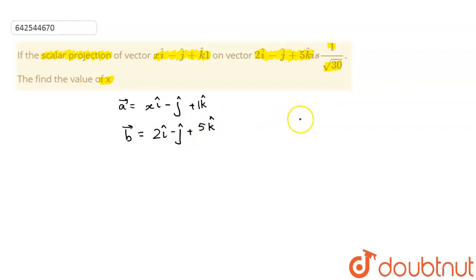Now the scalar projection of this vector is 1 upon root 30. This is the scalar projection. So I have to find the value of x. I know the formula of projection of one vector on another, which is scalar projection.